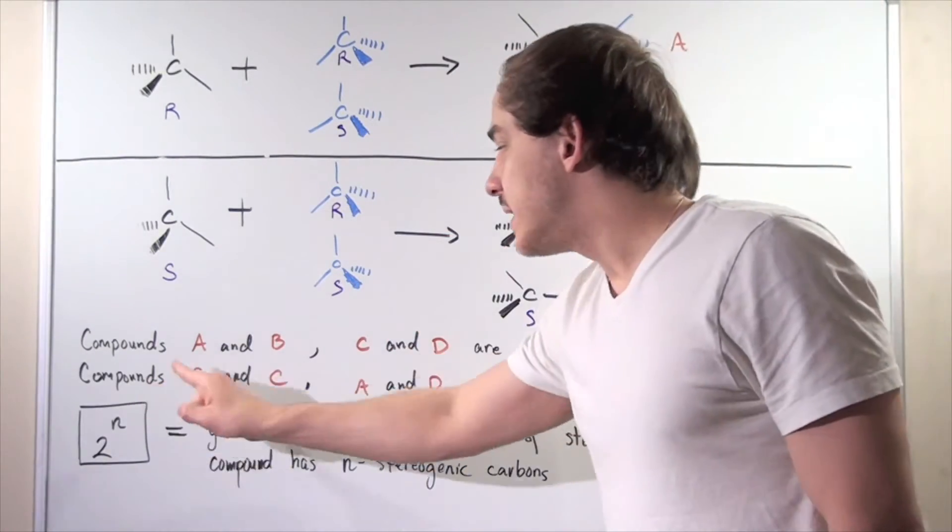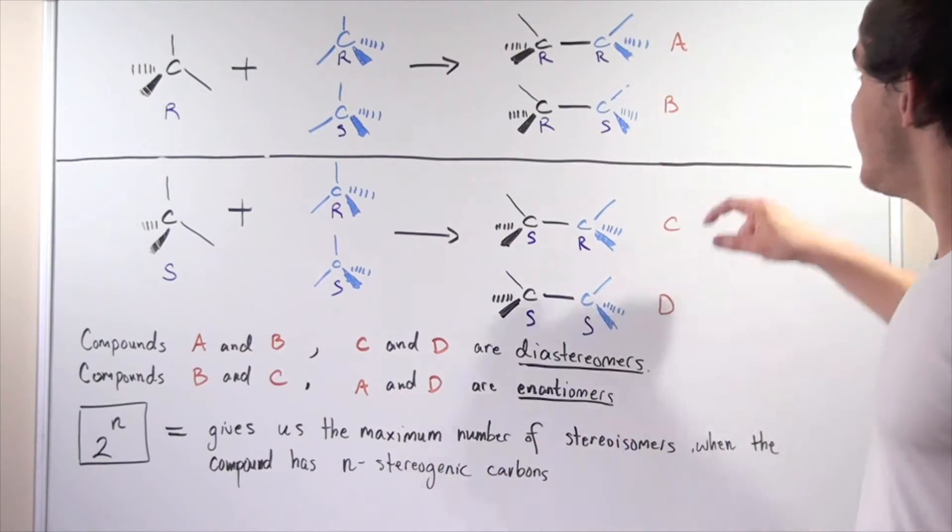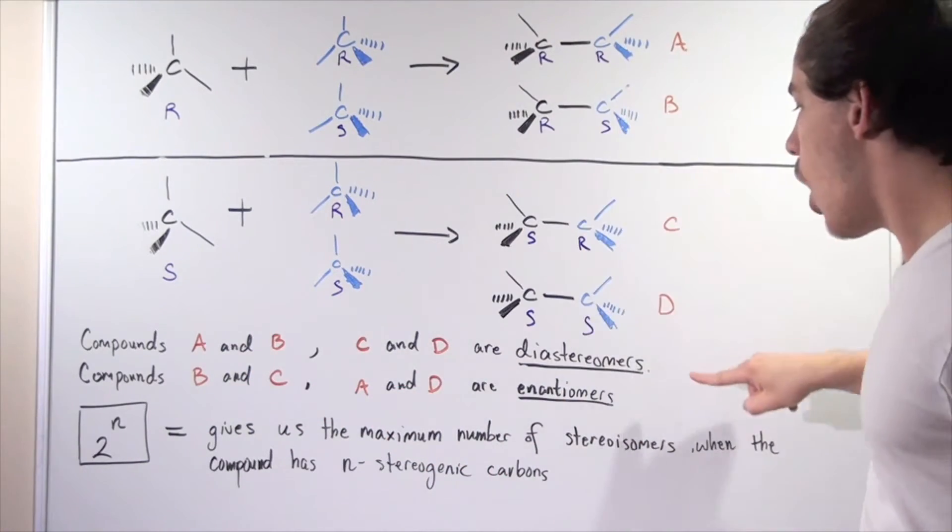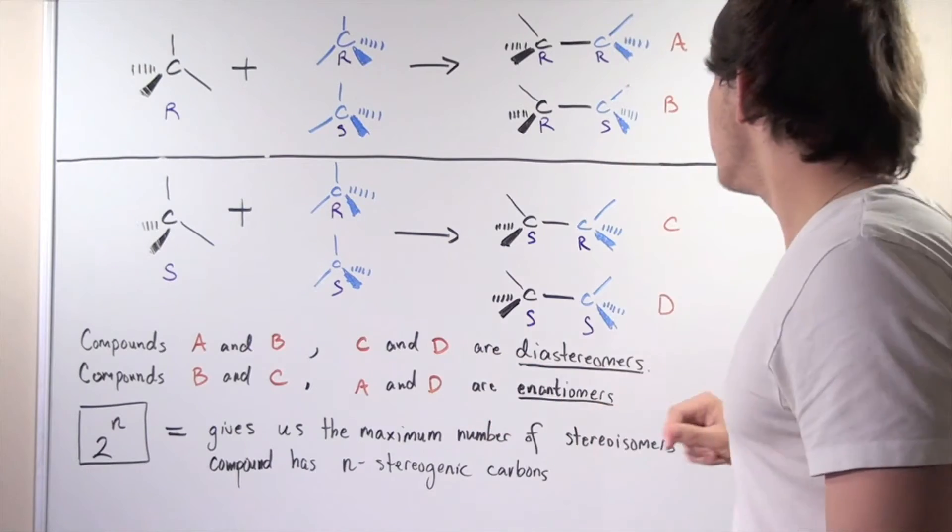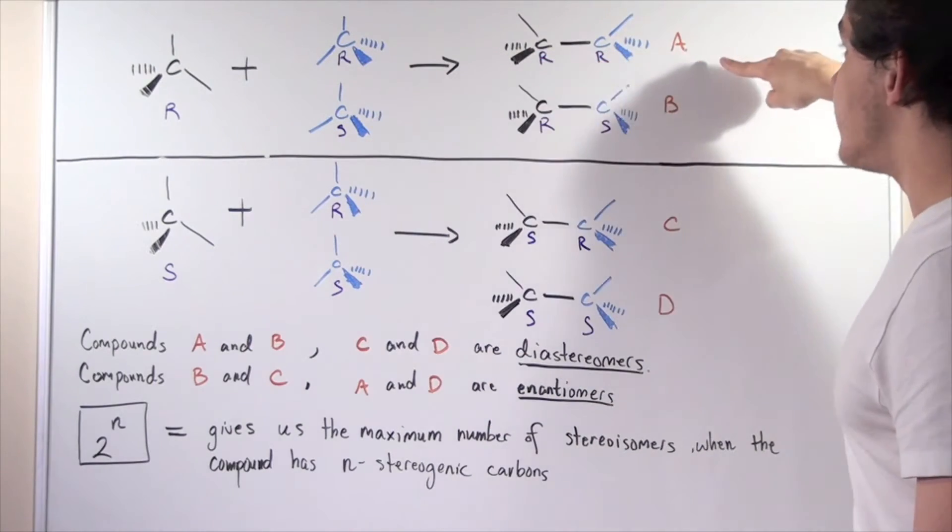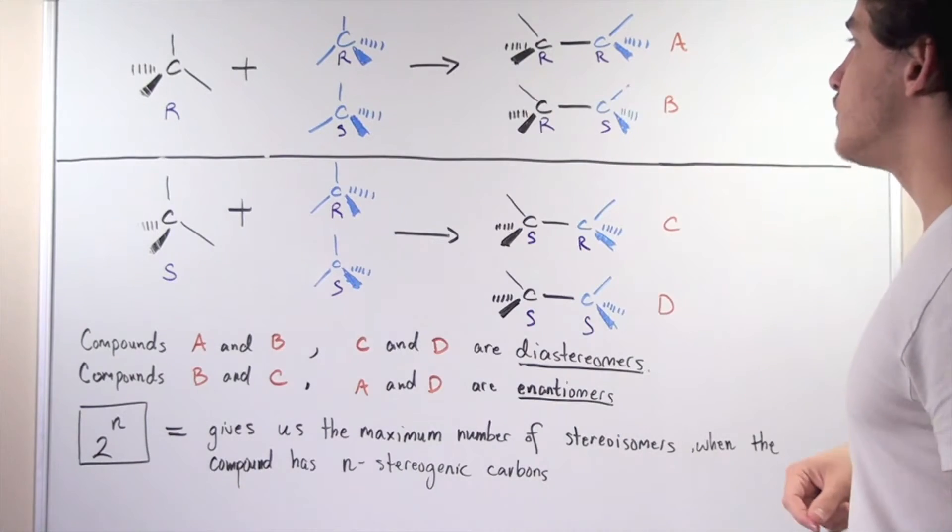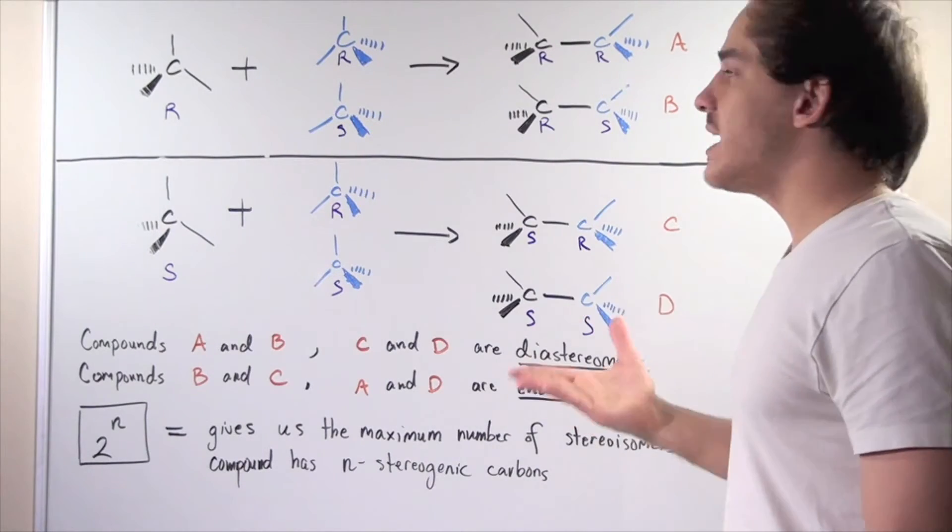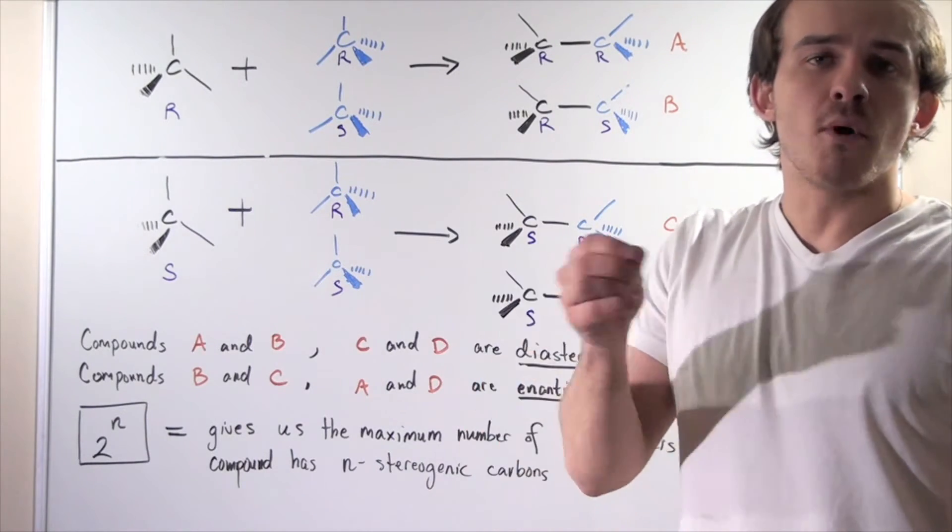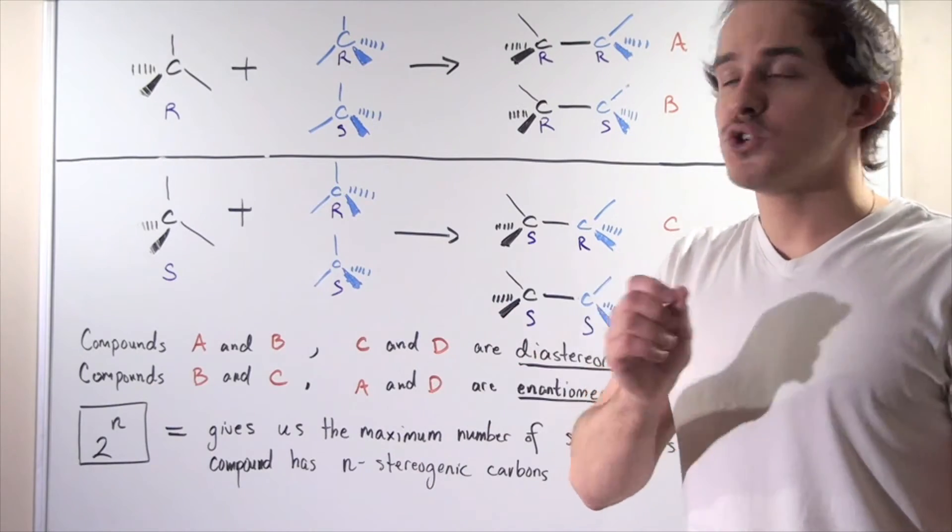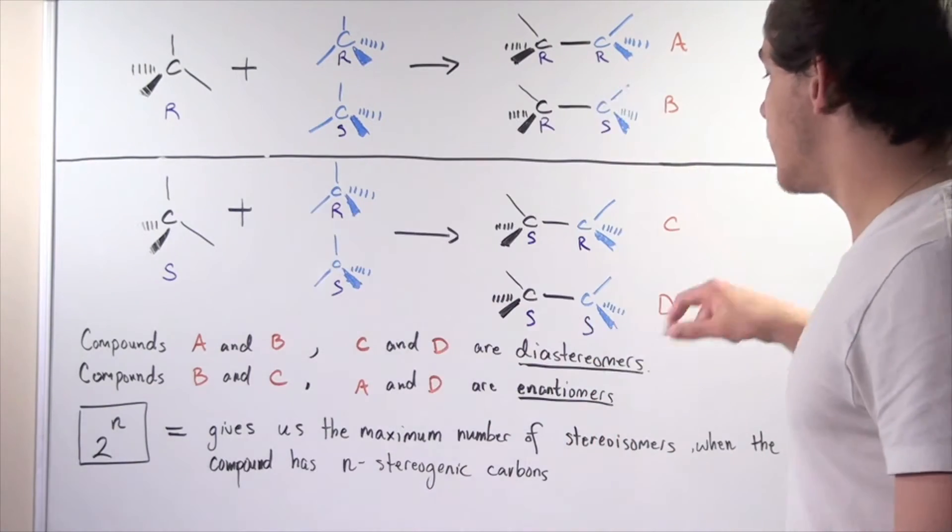Now compounds B and C and A and D are enantiomers because if we look at compound A, what's the mirror image of the R-R absolute configuration? Well whenever we take the mirror image we switch from R to S or from S to R. So R-R becomes SS.